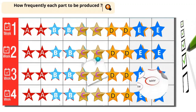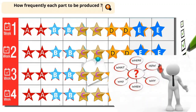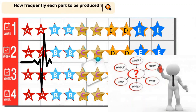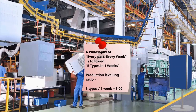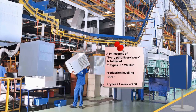A production levelling board has to be there in a factory, which will dictate the frequency with which a part is produced. The Kanban cards from this board will have to be issued into the production to start producing that part.